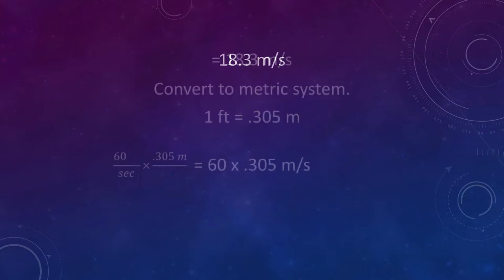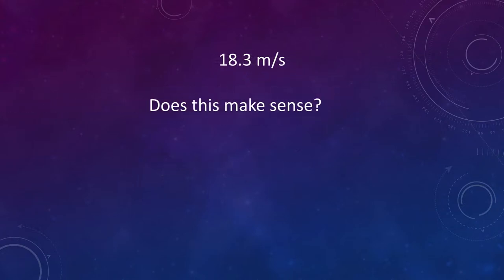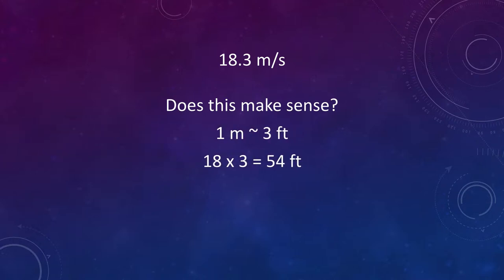When solving equations, we always want to ask the question, does this make sense? If a meter is about 3 feet, 18 times 3 equals 54, which is close to 60, so the answer does make sense.